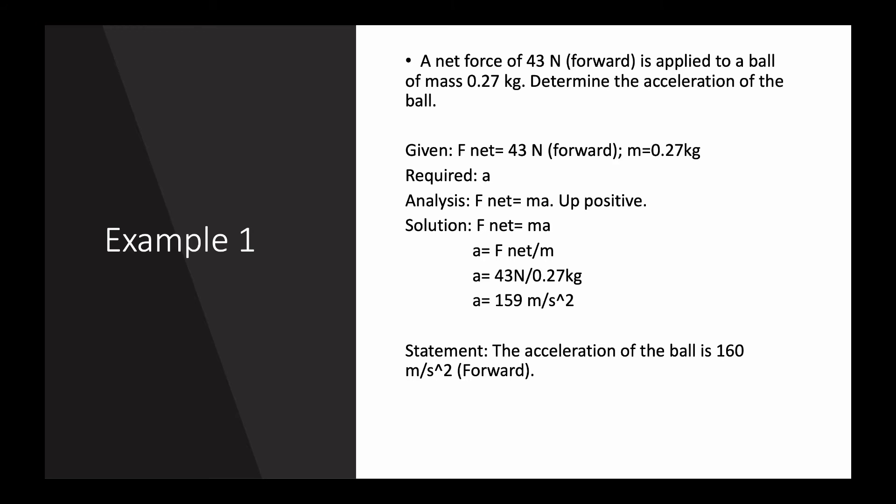Let's take an example: a net force of 43 newtons forward is applied to a ball of mass 0.27 kilograms. Determine the acceleration of the ball. Given: Fnet equals 43 newtons forward, mass equals 0.27 kilograms. Using Fnet equals mass times acceleration and rearranging: acceleration equals Fnet divided by mass equals 43 newtons divided by 0.27 kilograms, which gives 159 meters per second squared. Stated to two significant figures, the acceleration of the ball is 160 meters per second squared forward.